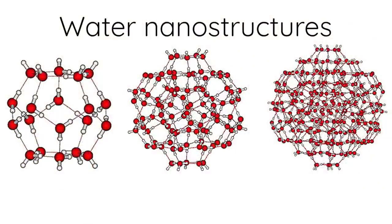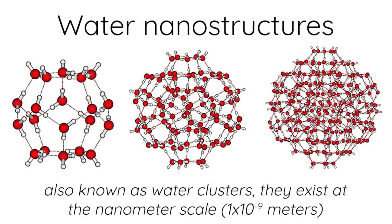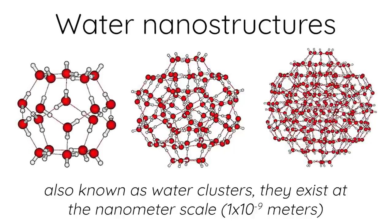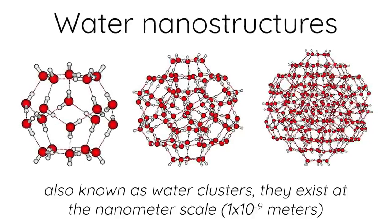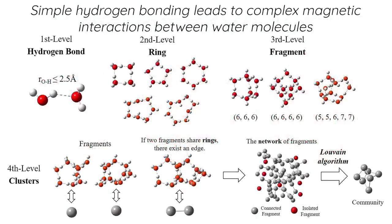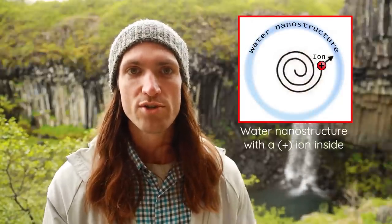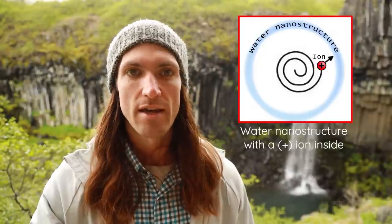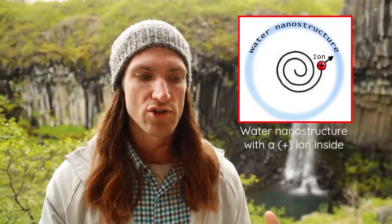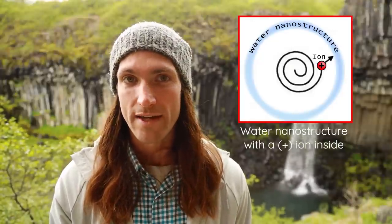Hydrogen bonds allow water to form nanostructures — this is where we get into the quantum dynamic properties of water. Nanostructures are where multiple water molecules form a usually spherical, symmetrical structure — it might be 18 water molecules together, or up to 200 or more water molecules all bonded together. These nanostructures, at the nanometer scale, can actually capture and hold on to molecules and ions by encapsulating them. This is important because water nanostructures can hold on to things that are biologically relevant and useful.